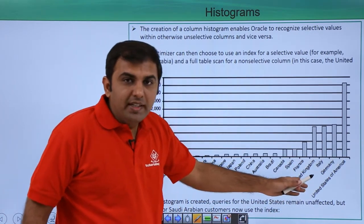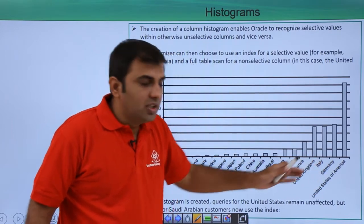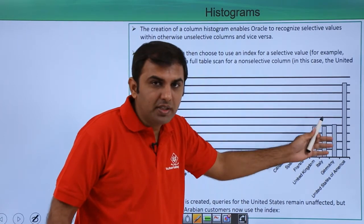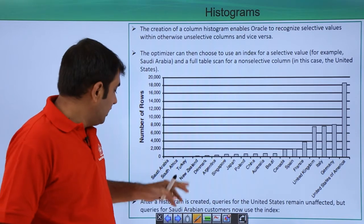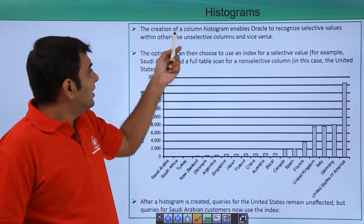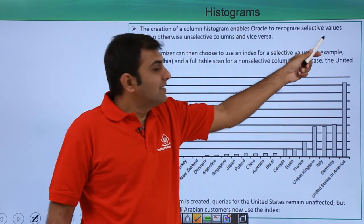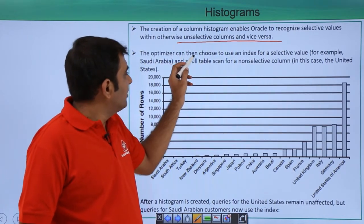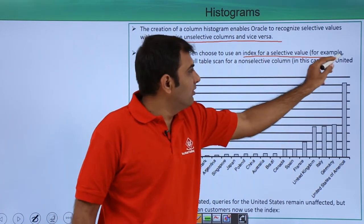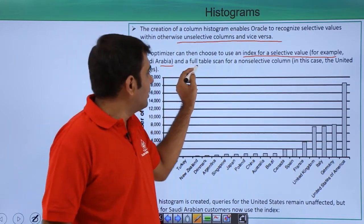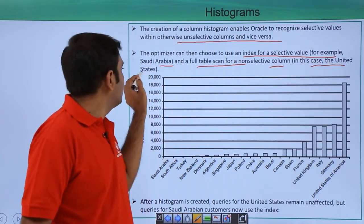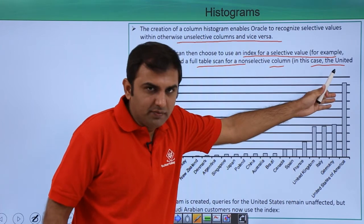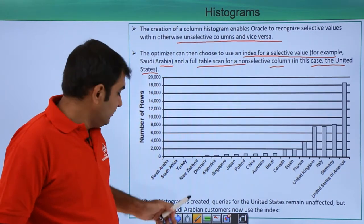If you require data for the United States that is fine - at that time it uses a full table scan because you require maximum data from the table. But if you require very few records, at that time it should use an index scan. The creation of a column Histogram enables Oracle to recognize selective values within an otherwise unselective column. The optimizer can then choose to use an index for selective values like Saudi Arabia, and a full table scan for non-selective columns like the United States.